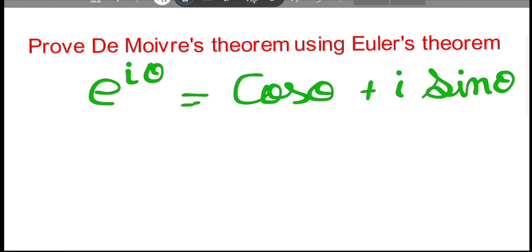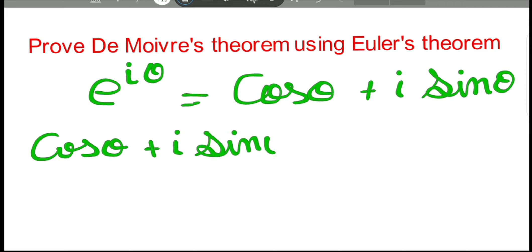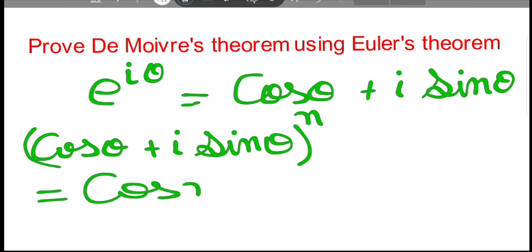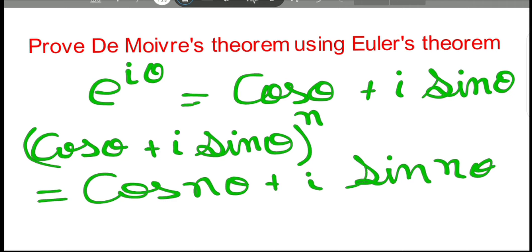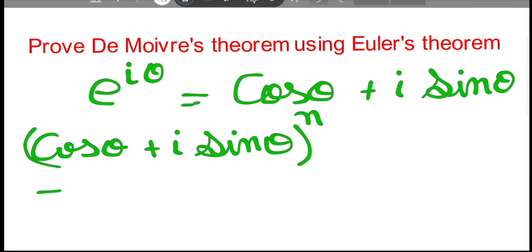And what about De Moivre's theorem? Let's state it. De Moivre's theorem states: cos theta plus i sine theta, the whole thing to the power n, equals cos n theta plus i sine n theta. So we have stated De Moivre's theorem and Euler's theorem.